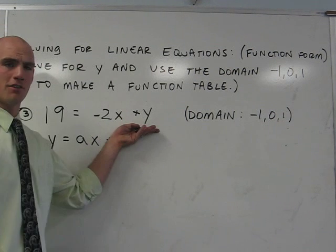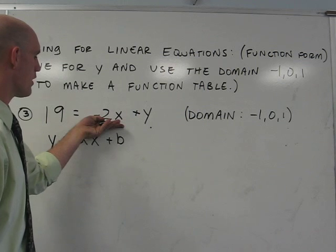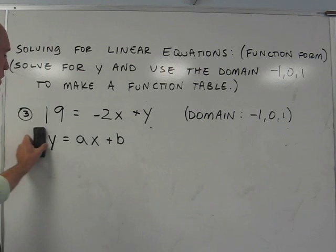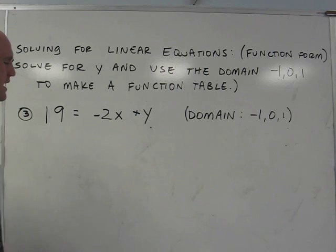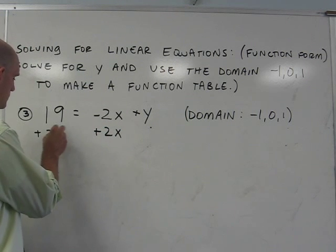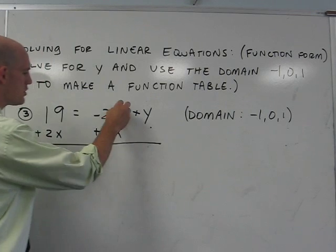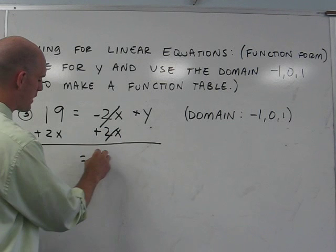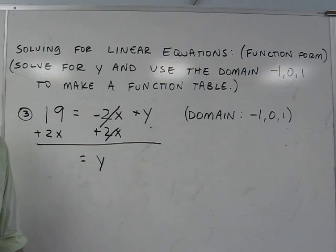In order to solve for y, we need to get rid of the part negative 2x. In order to do that, if we simply add 2x to both sides, 2x is eliminated on this side and we are left with y on the right side of the equation.